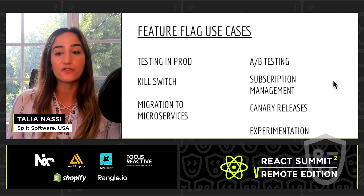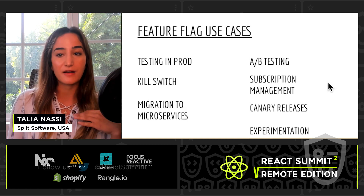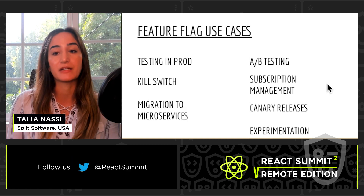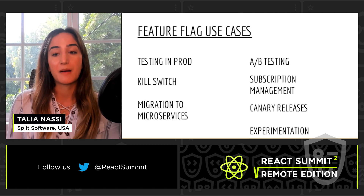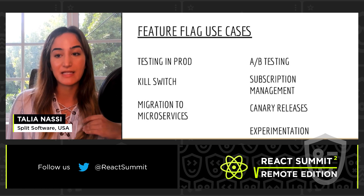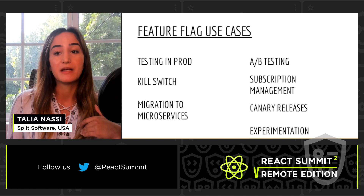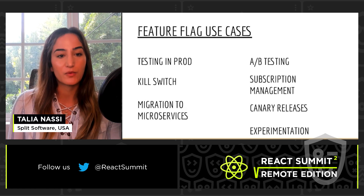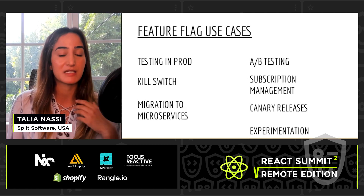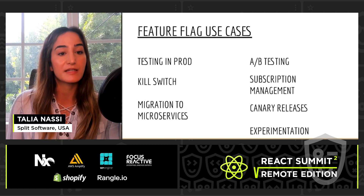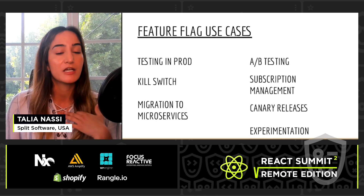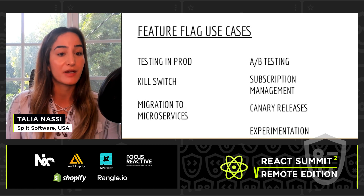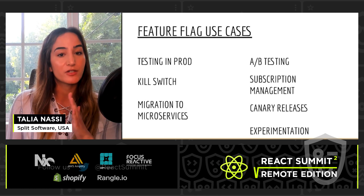A feature flag is a piece of conditional code that lets you separate code deployment from feature release. We just saw one example of how we'd want to use this, but there are so many other ways to use feature flags — we can use them to test in production, and we can use them as a kill switch to turn features off in production that aren't working. You can use them to safely migrate your microservices.